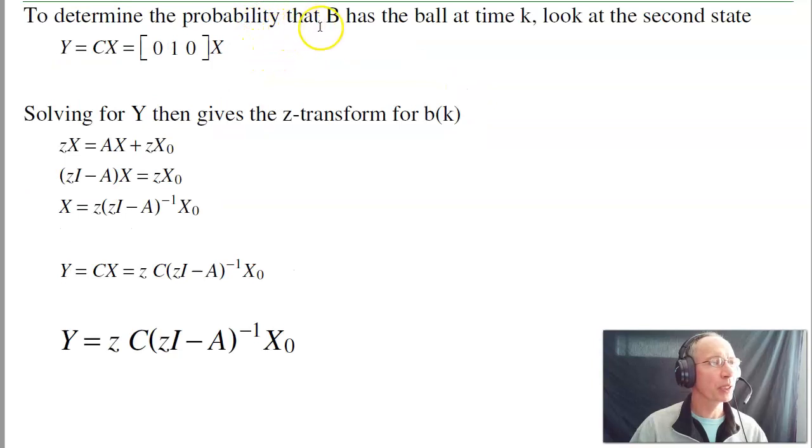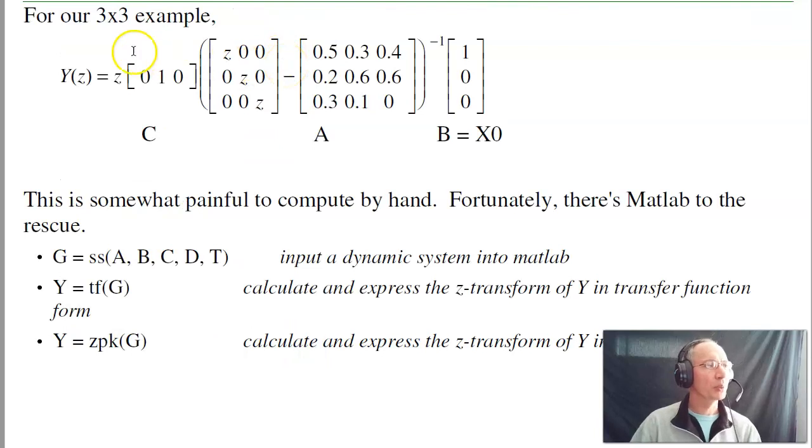To determine the probability that B has the ball, look at the second state, which is your c times x. To solve, what you do is take your system, solve for x, and substitute y equals cx with that little z coming out in front. This is the z-transform for my output. To plug in numbers, here's my c matrix, observe the second state. Here's the zI minus A times B. Multiply this out, I'll get a polynomial in z. That's the z-transform of y. That's rather painful to do, but fortunately, there's MATLAB to the rescue.